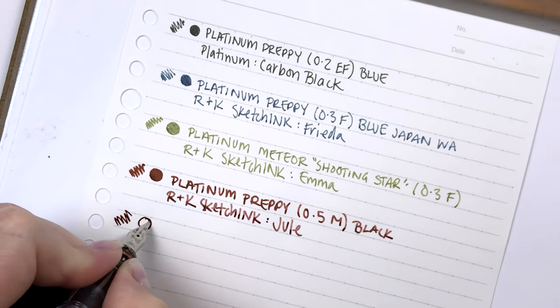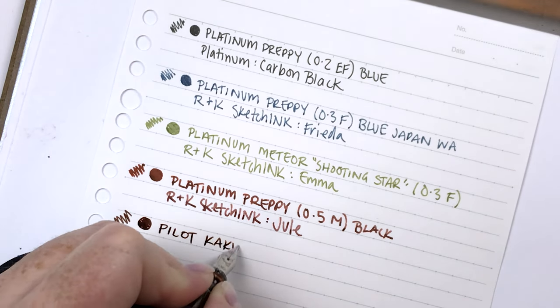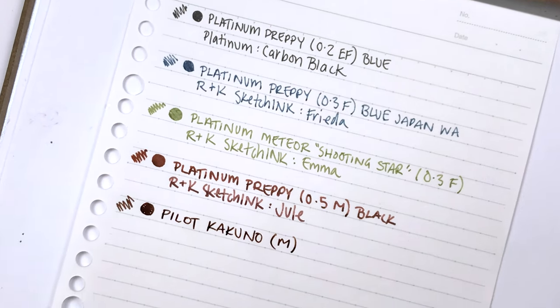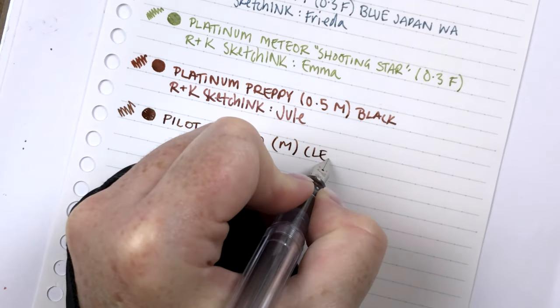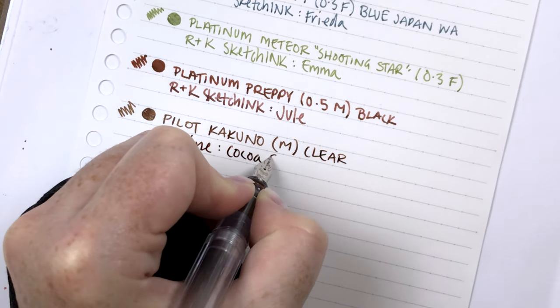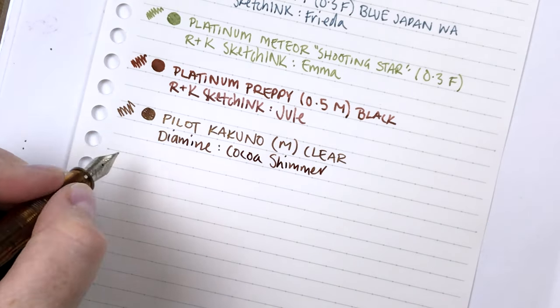This one is the Pilot Kakuno and I'm using a shimmer ink in it so I can take it apart and clean it out. This is the Diamine Cocoa Shimmer and it's really pretty. I'll hold it up after we finish writing out all of these different samples.